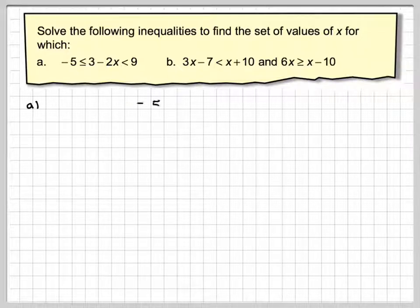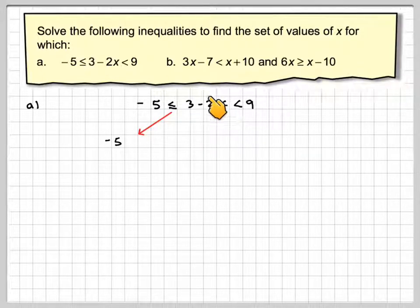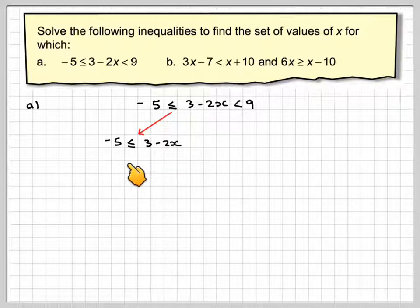Let's look at this one first. Set it out like this: you've got 3 minus 2x greater than or equal to minus 5 and less than 9. What you do is separate it into two separate inequalities. So you separate into minus 5 is less than or equal to 3 minus 2x, and then solve that.